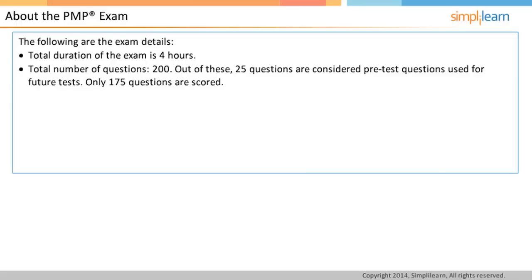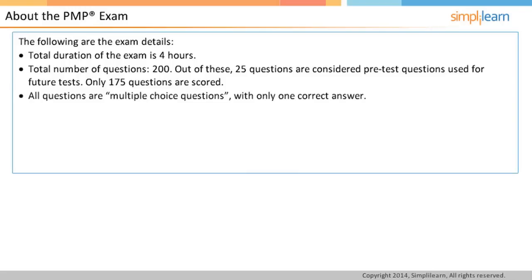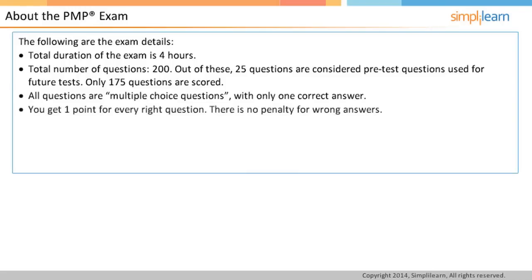Of the 200 questions, 175 will be scored. All questions are multiple choice questions with only one correct answer. You get one point for every question answered correctly. There is no negative marking for incorrect ones. You may also mark a question for review and revisit it at the end if unsure.